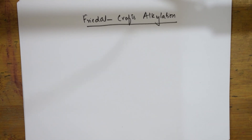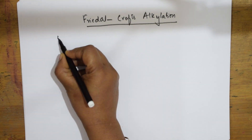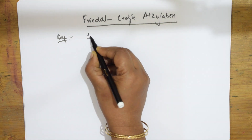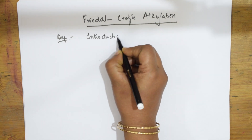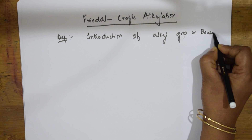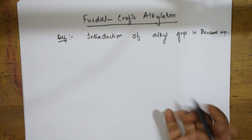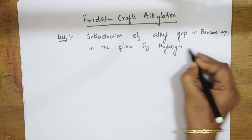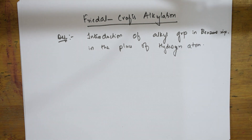Welcome back students. In today's session we are going to learn the Friedel-Crafts alkylation reaction of benzene. Just as nitration means introduction of NO₂ group, sulfonation means introduction of SO₃H, and halogenation means introduction of chlorine, Friedel-Crafts alkylation is basically the introduction of an alkyl group in benzene in place of a hydrogen atom.